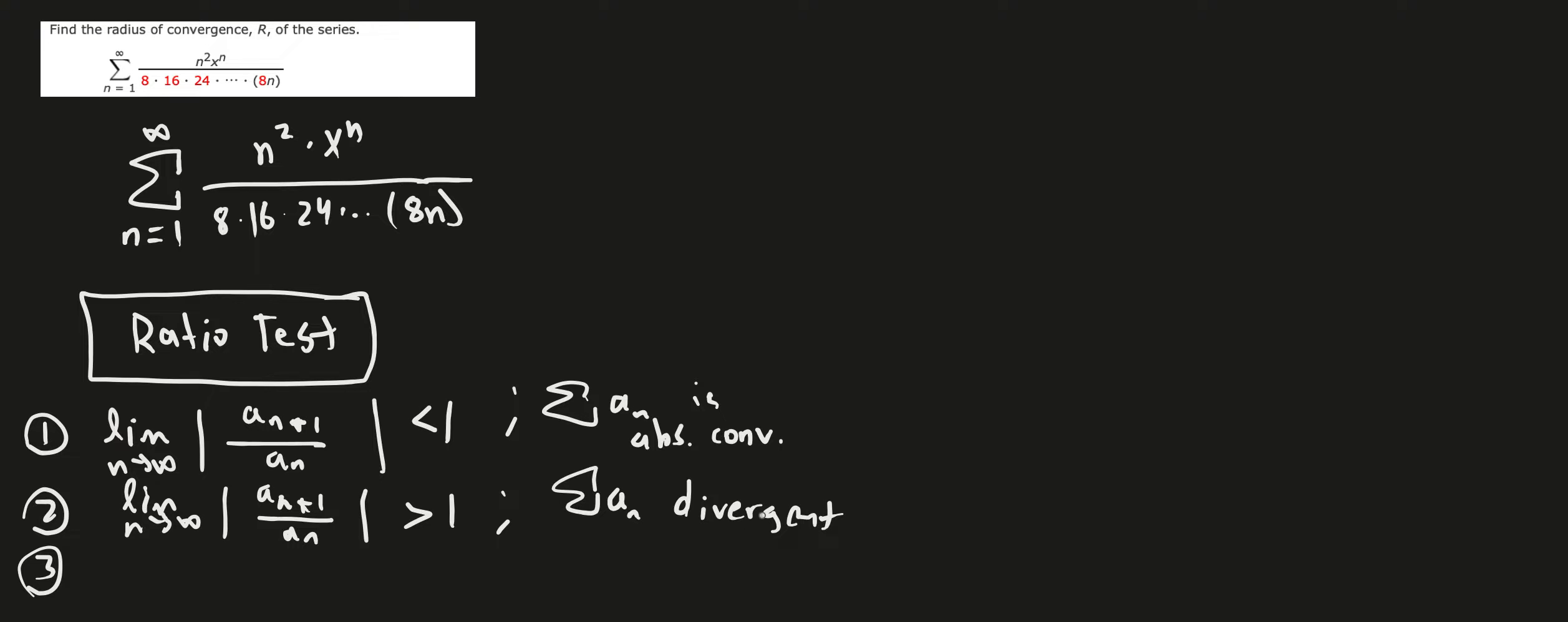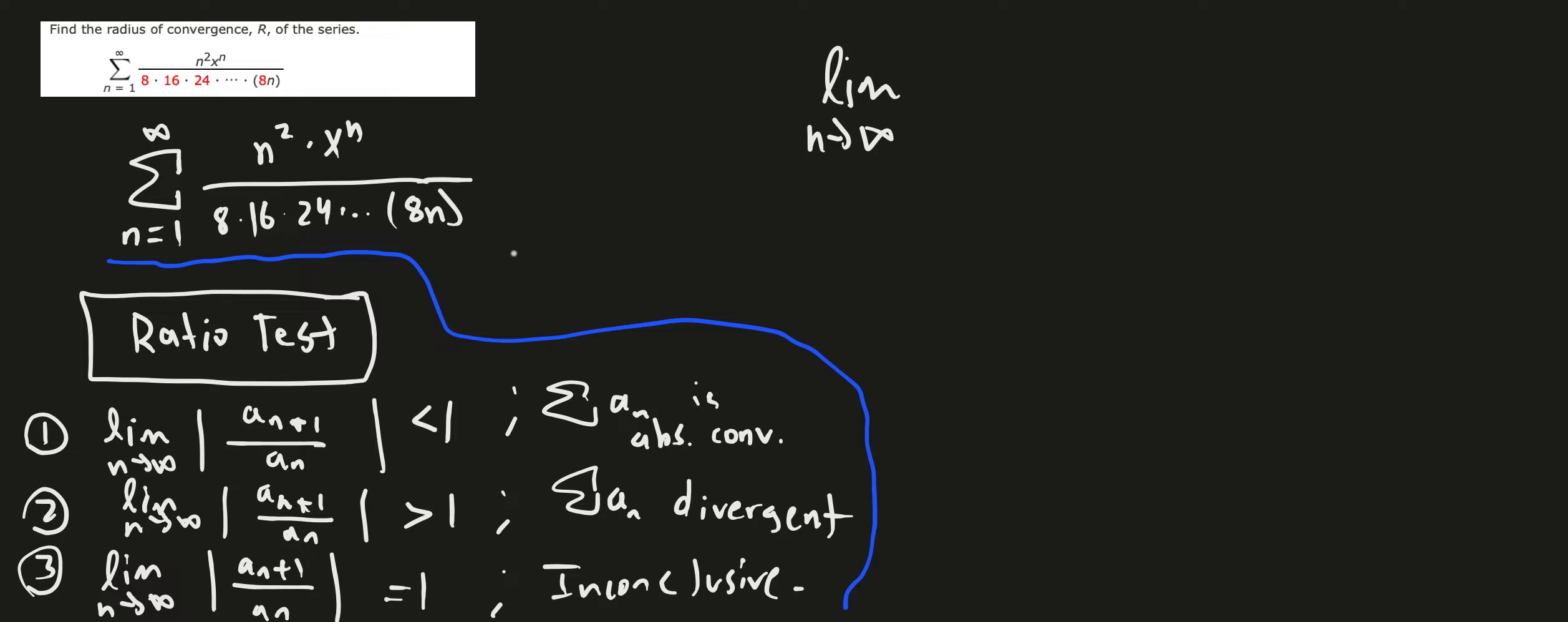And finally, if our limit as n approaches infinity of this stuff is equal to 1, we are inconclusive. We cannot make a conclusion about our convergence or divergence based on the ratio test if we get an inconclusive result. So let's use this. Basically we're going to treat this just like what we do here.